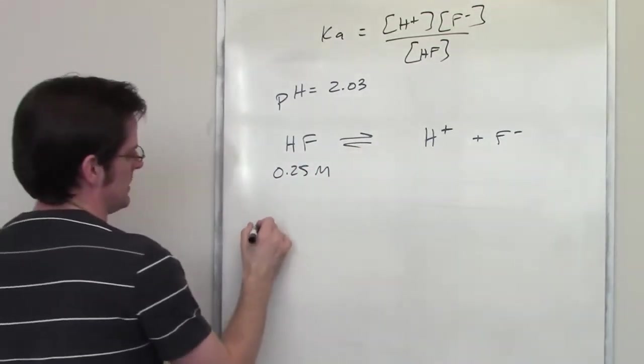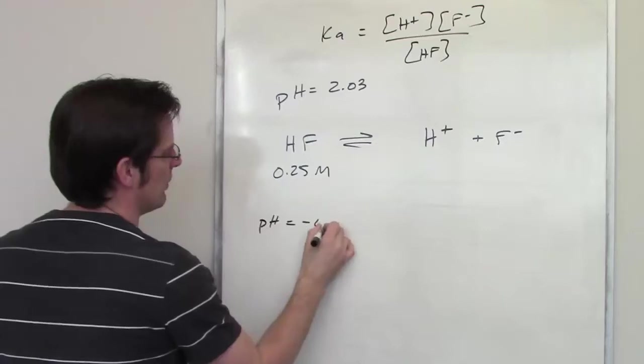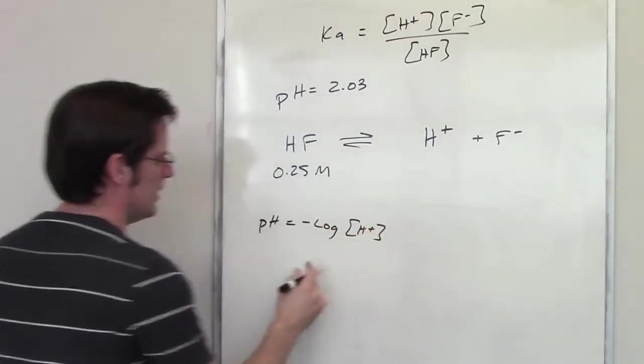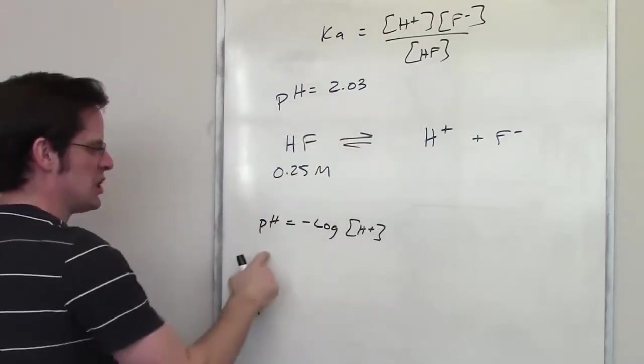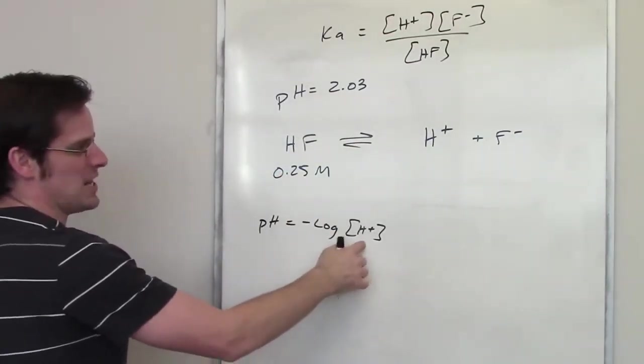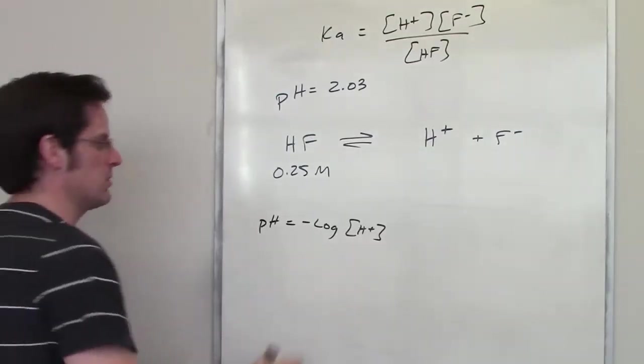Well, yeah, you might remember that pH is equal to the negative log of the concentration of H+. So you could put in 2.03 here and use some rigmarole to determine what H+ concentration is equal to.